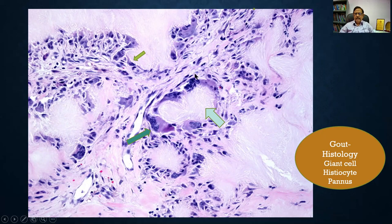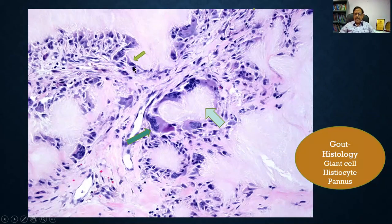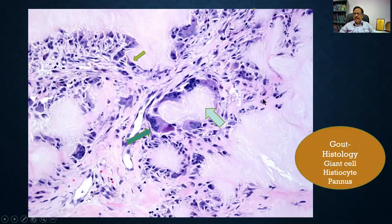Looking at this histological slide, three arrows are drawn. In the acellular space, you can observe needle-shaped structures — this is the tophus. Around it are multinucleated giant cells with many nuclei. There are also other large cells throughout, which are the histiocytes. So the key features are giant cells, histiocytes, and pannus. Please remember these histological findings.